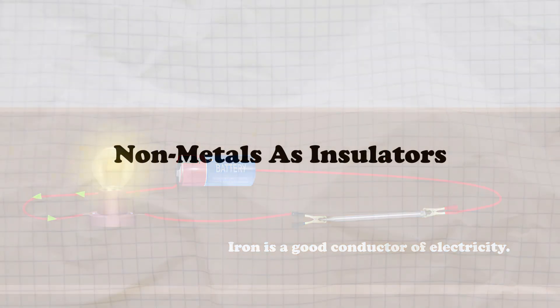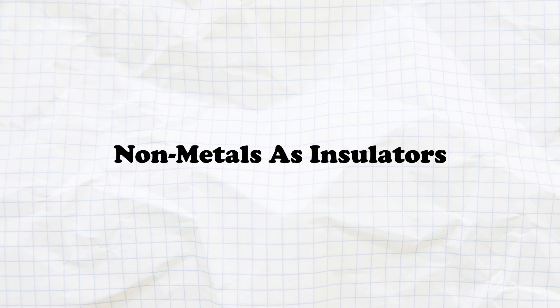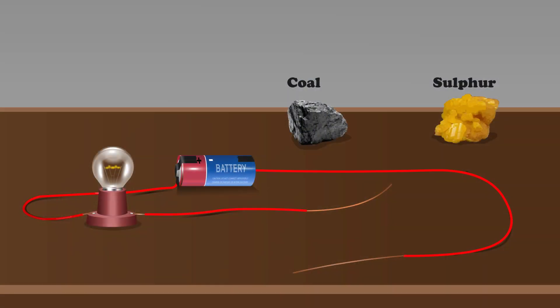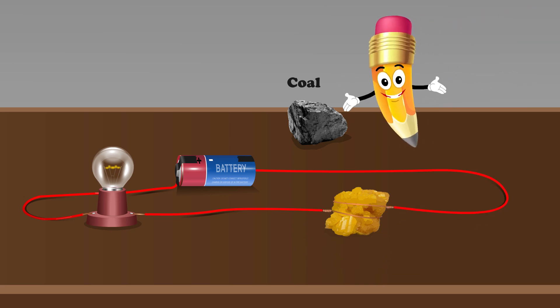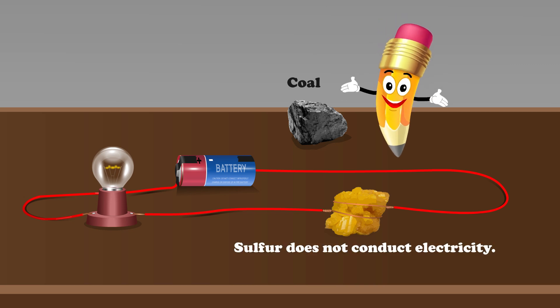Non-metals as insulators. Now let's look at non-metals. These materials usually act as insulators. When we connect a sulphur lump instead of metal, let's see what happens. The bulb does not glow, showing that sulphur does not conduct electricity.